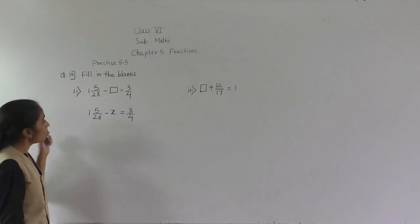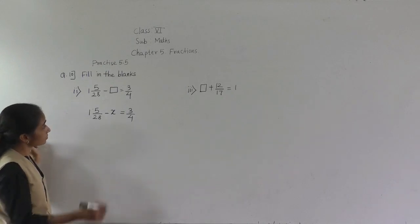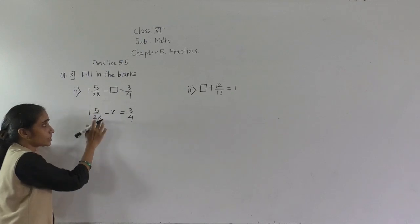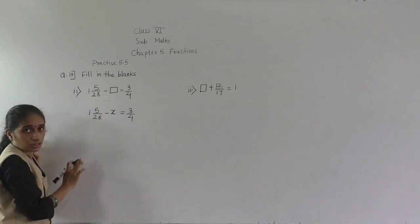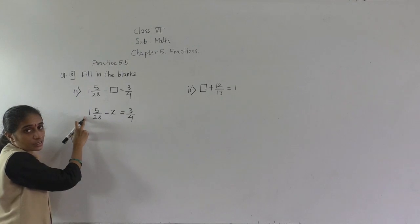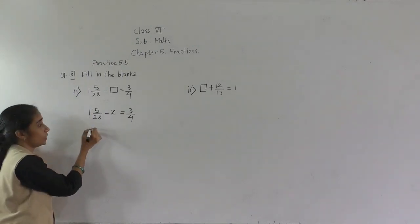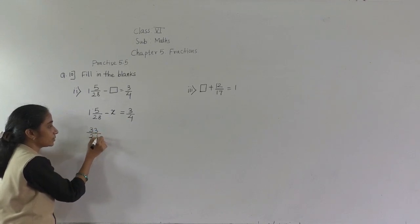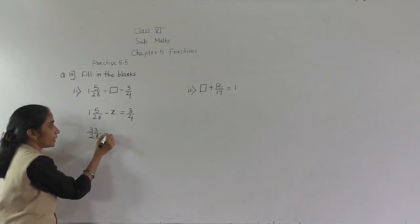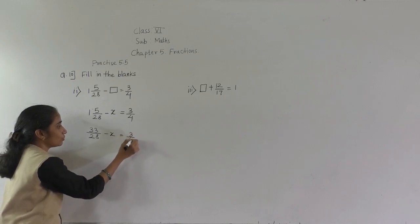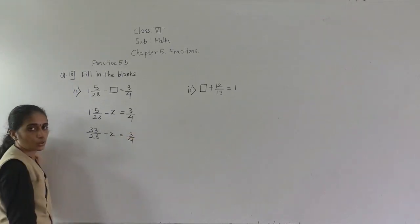Now what we can do — first we can convert this mixed fraction to an improper fraction. 28 ones are 28, 28 plus 5 is 33. So 33 upon 28 minus x is equal to 3 upon 4.